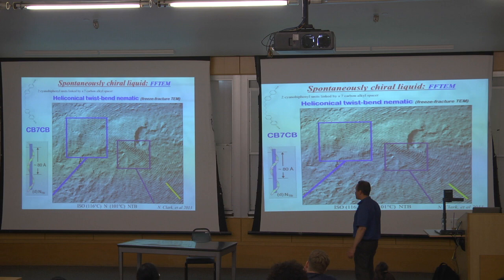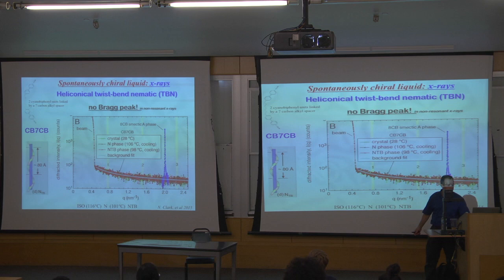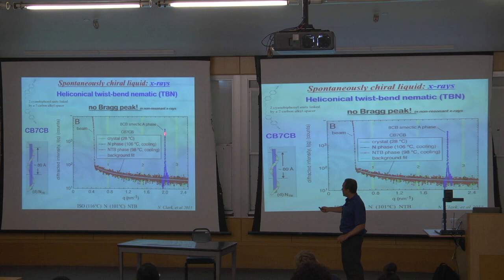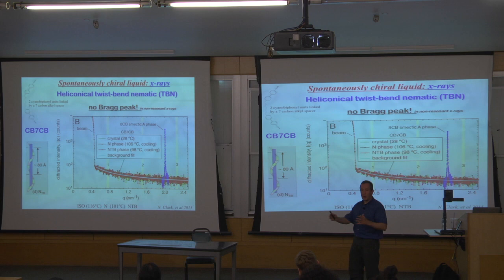But if it's a layered phase you can do X-ray scattering and see a Bragg peak associated with that layering. If you do it on an ordinary smectic phase — 8CB, which is a smectic A liquid crystal — here's a Bragg peak telling you there's layered structure. But if you do it on CB7CB, this molecule, you see nothing — it's completely flat. That's proof that it's actually a fluid: there's no periodic ordering of any kind, no Bragg peaks. So that's somewhat in contradiction to what the freeze fracture showed.